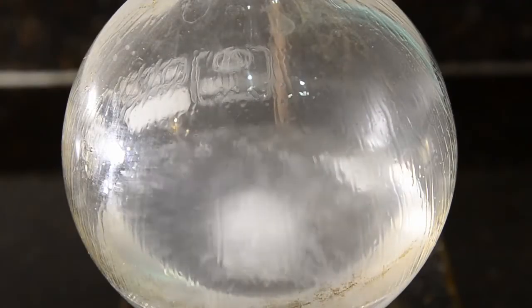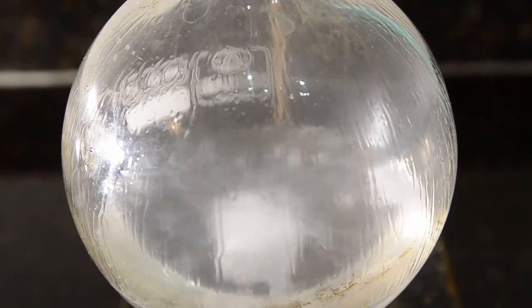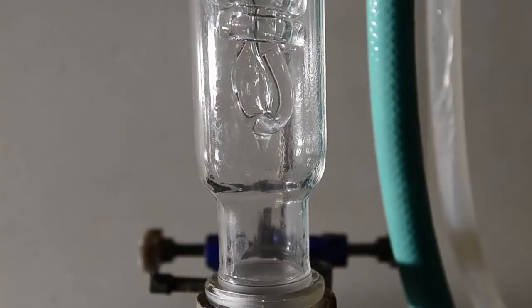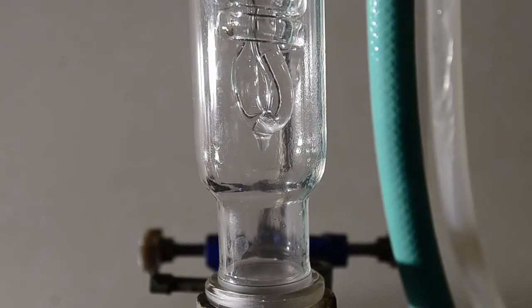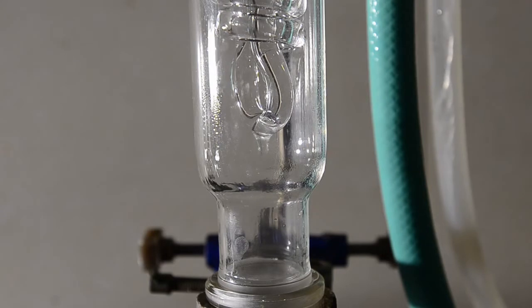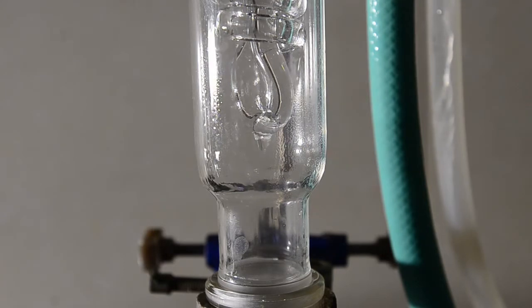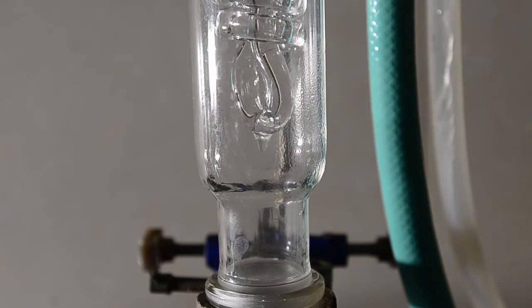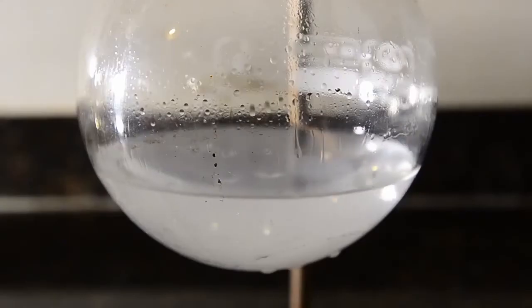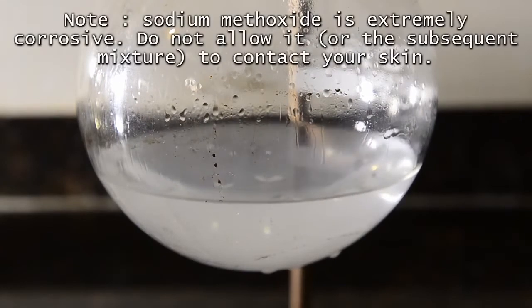Within a minute or two the methanol will get hot and start to reflux slightly in the flask. The sodium metal takes between 5 and 10 minutes to dissolve completely. Just allow the mixture to reflux and wait until it has all reacted. Nearly there now. Here's our hot sodium methoxide solution.